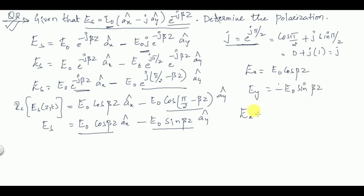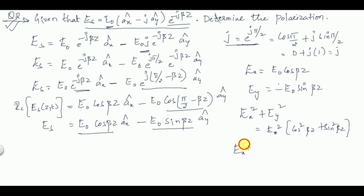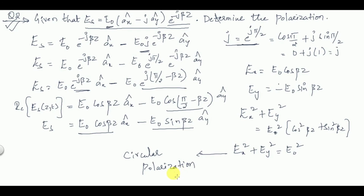Now computing E_x² + E_y²: we get E₀² · cos²(βz) + E₀² · sin²(βz) = E₀² · (cos²(βz) + sin²(βz)) = E₀². So E_x² + E_y² = E₀², which is the equation of a circle. Hence the polarization is circular polarization.